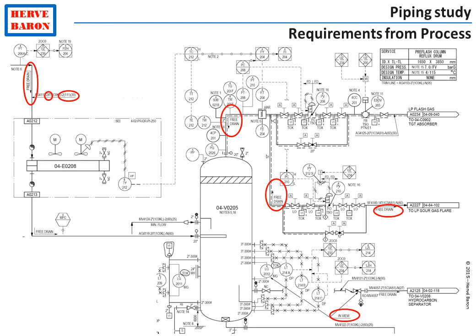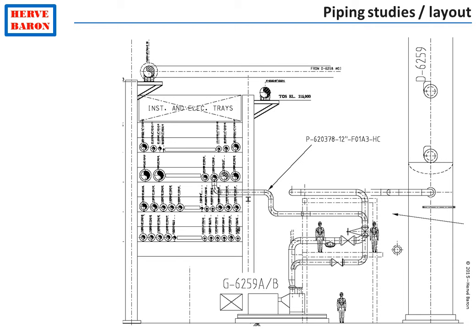Pressure safety relief valves or depressurization valves, for instance, are located at high points above the equipment they protect and above the flare header to which they discharge. All these indications are shown by process on the P&IDs.